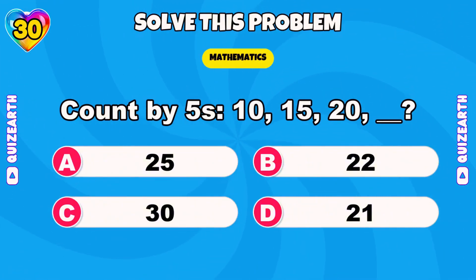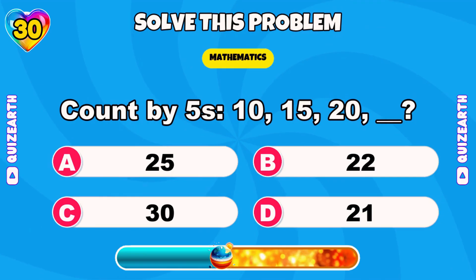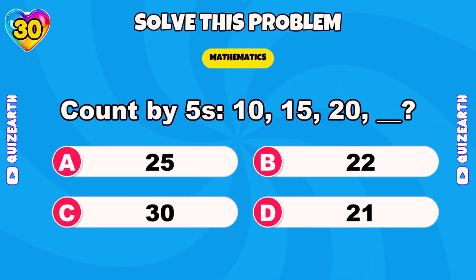Count by fives: ten, fifteen, twenty. What's next? Quick. Superb, twenty-five.